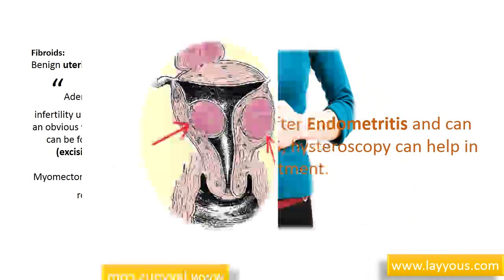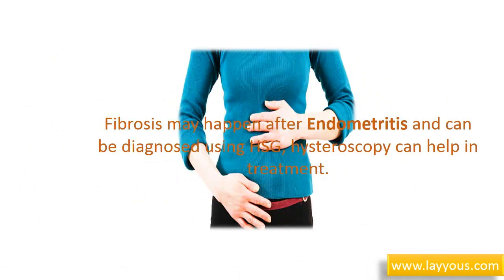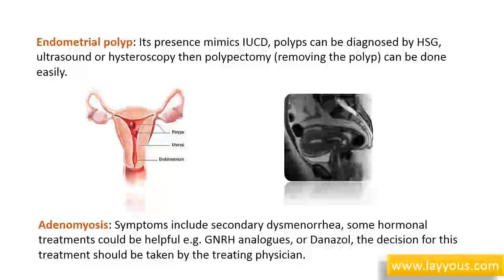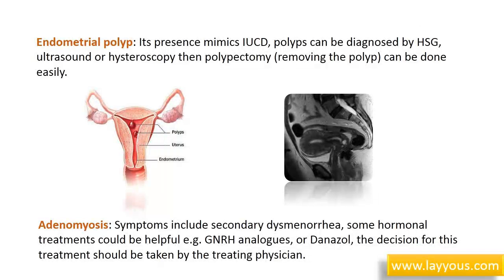Fibrosis may happen after endometritis and can be diagnosed using HSG; hysteroscopy can help in treatment. Endometrial polyp: its presence mimics an IUCD. Polyps can be diagnosed by HSG, ultrasound, or hysteroscopy, and polypectomy — removing the polyp — can be done easily.